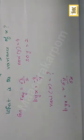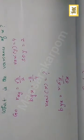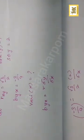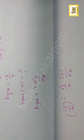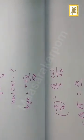Using the formula byx equals r times (sigma y / sigma x): sigma y over sigma x and variance of y is 4, so sigma y is 2. Substituting: minus 3 by 4 equals (root 3 by 2) times (2 / sigma x).